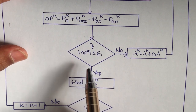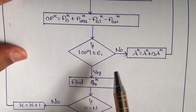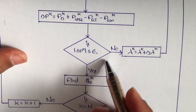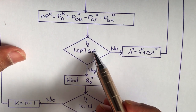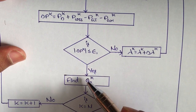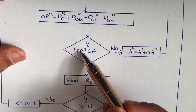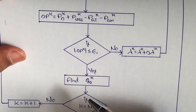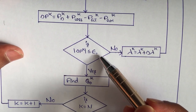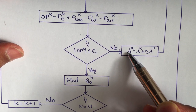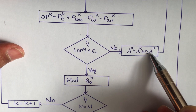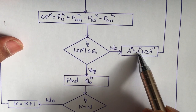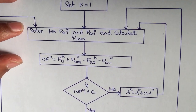After calculating delta P_k, we compare whether delta P_k is less than epsilon 1. Epsilon 1 is the tolerance for power. If delta P_k is not less than epsilon 1, we increase the value of lambda k by a small increment delta lambda k — that is, lambda k becomes lambda k plus delta lambda k.